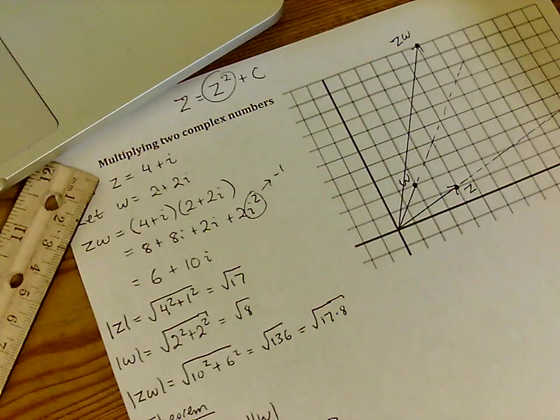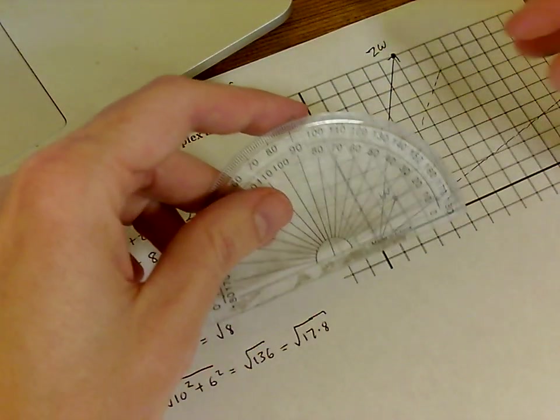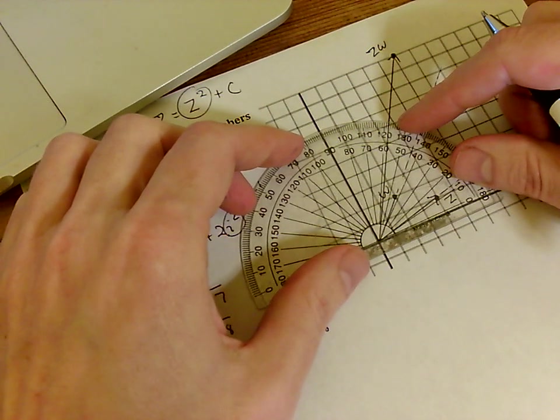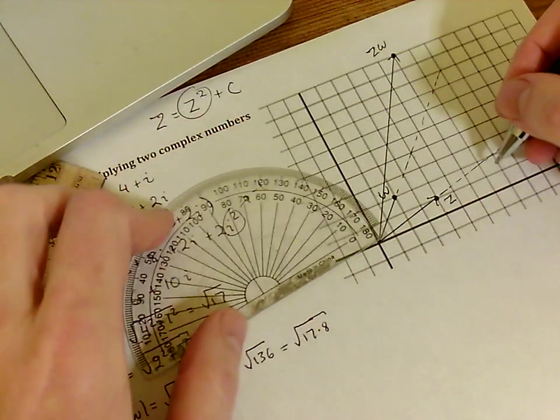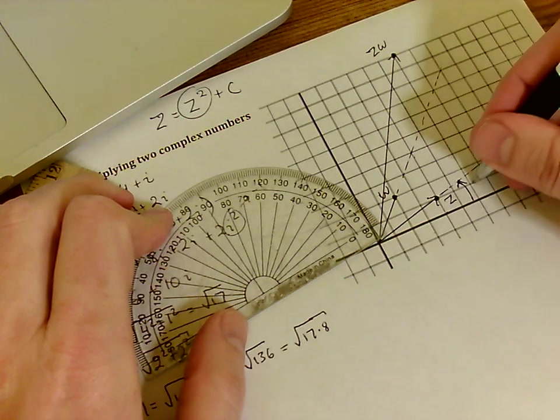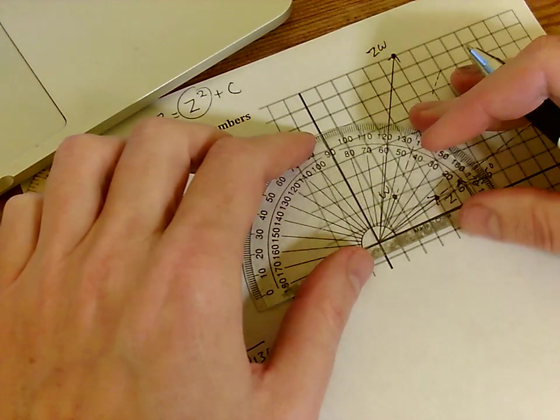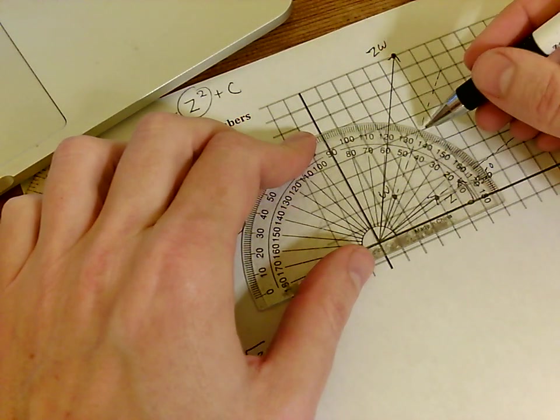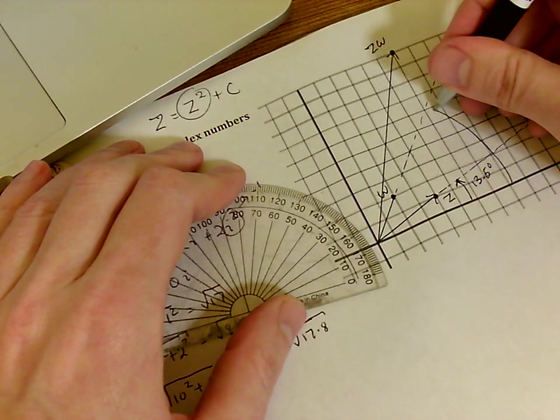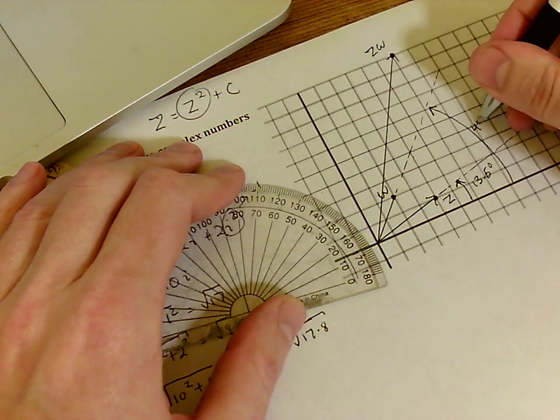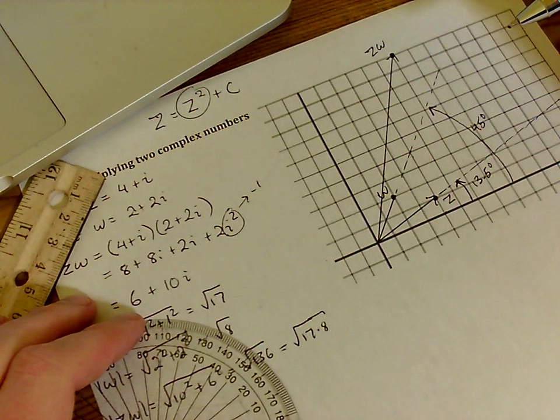Now something very cool happens when we look at these angles. Let's actually measure the angle that z makes with the real axis. Looks like that's about 13 and a half degrees. And if I measure the angle that complex number w makes with the x-axis, I get, of course, 45 degrees. We could have predicted that from the coordinates by itself.